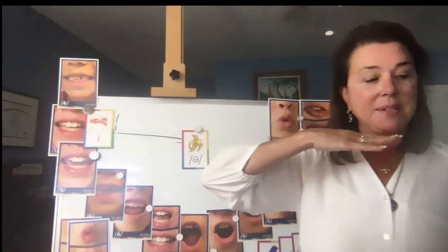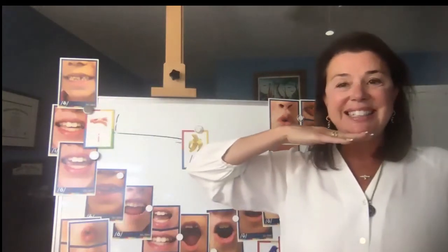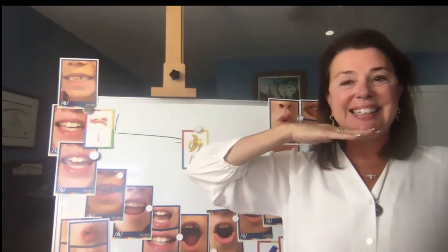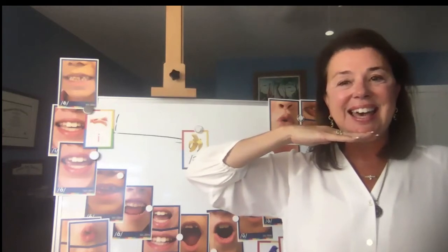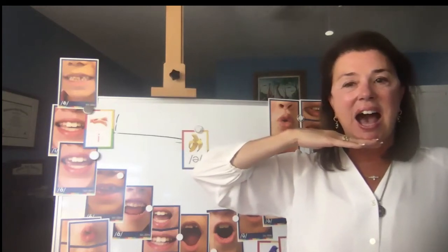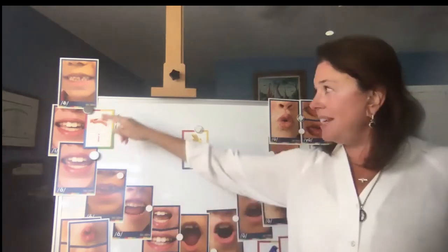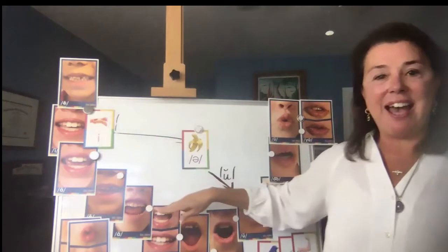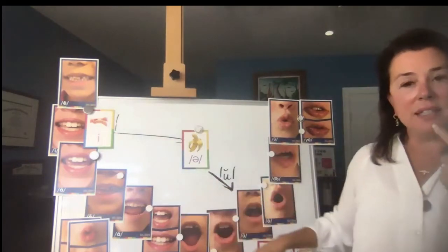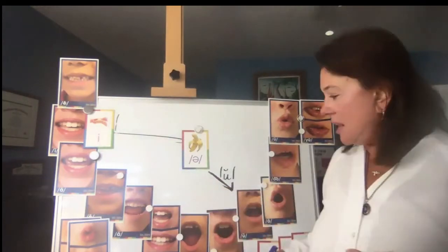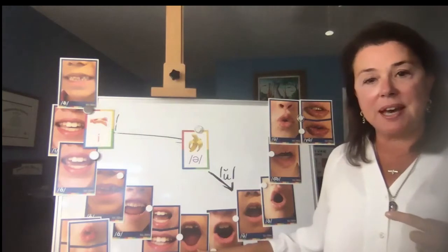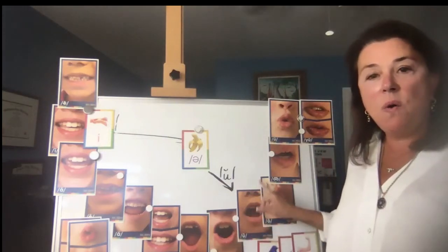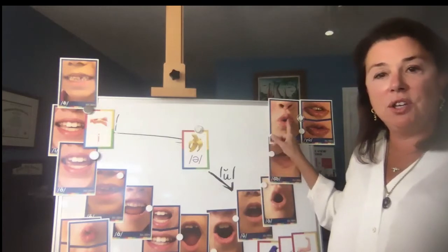Starting with the tight smile — E — then we begin to open our mouth slightly: E, I, A, E, A, I, A. Did you see how my mouth dropped down? E, I, A, E, A, I — that's the doctor sound, AH — which we consider the most open sound. Then we have A, A, A, O, U, U, and U.